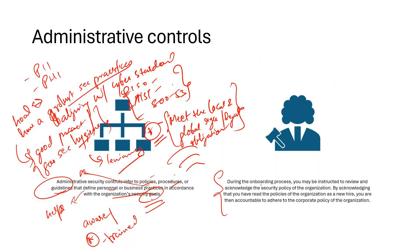One example of administrative control is your onboarding process. You may be instructed to review and acknowledge the security policy of the organization when joining a new firm. By acknowledging it, you confirm that you have read all the policies and procedures as a new hire, and if you are not adhering to corporate policy you will be held accountable. If something goes wrong and an employee has done something wrong, but you can't prove they were made aware of the policies, you can't really do anything about it from a legal perspective unless it's a violation at a legal or regulatory level.